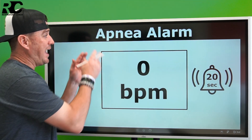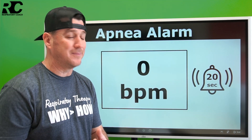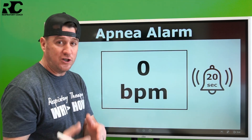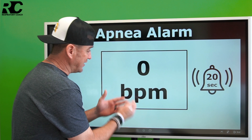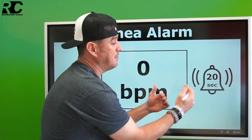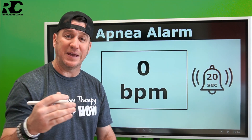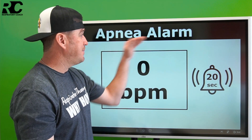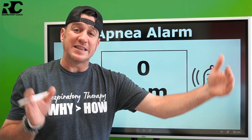When we talk about the apnea alarm, this is completely separate — something completely different. The apnea alarm is only going to alert us if there are no respirations within a certain amount of time. The low rate alarm is based on the total number of breaths per minute, whereas the apnea alarm is based on time elapsed without a breath.